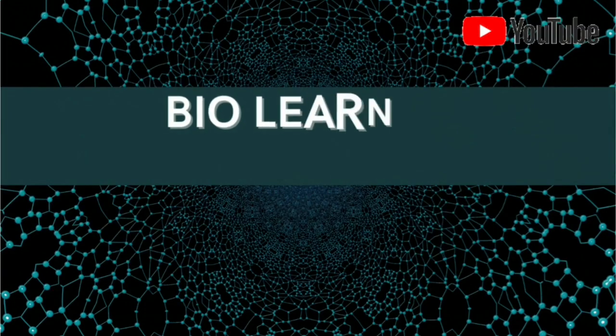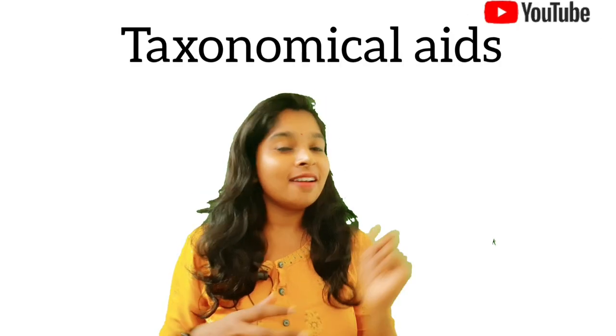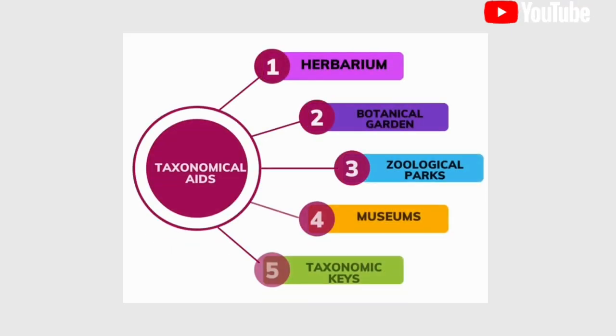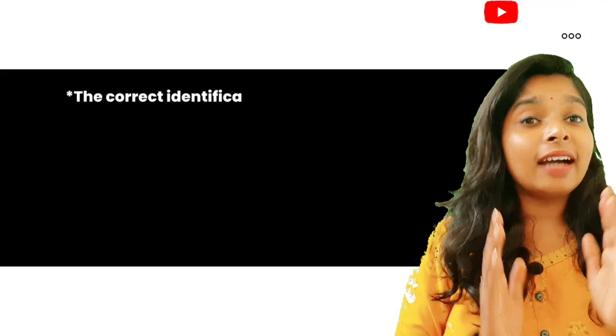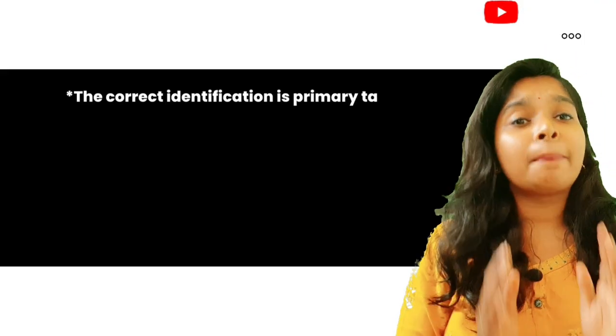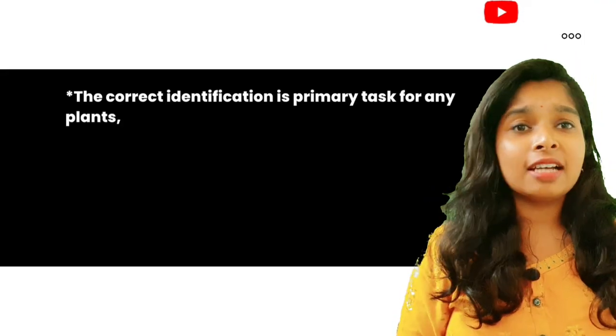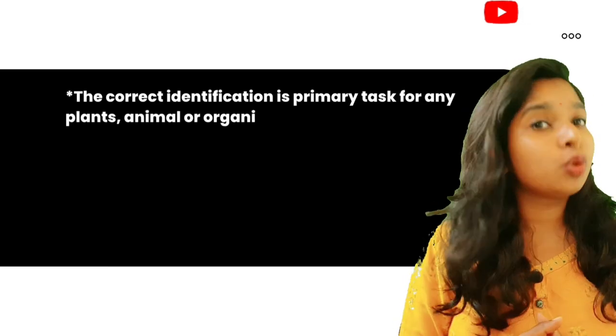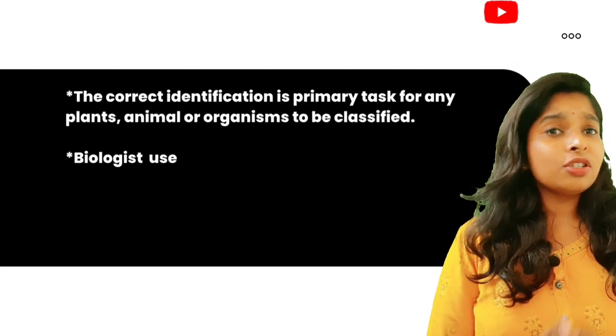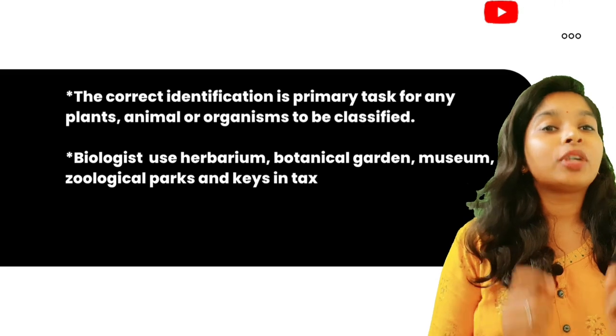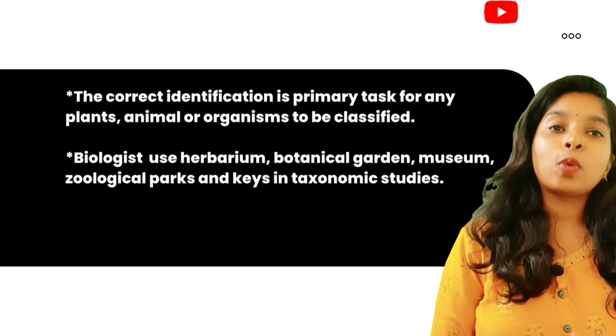Welcome back to the Biola Nerd Platform. In this video we will be talking about taxonomical aids, which include herbarium, botanical gardens, zoological parks, museums, and taxonomic keys. The correct identification is a primary task for any plant, animal, or organism to be classified, so biologists use these tools in taxonomic studies.